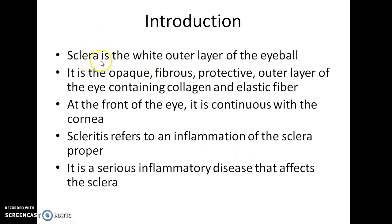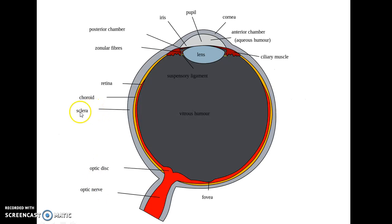What is sclera? Sclera is the white outer layer of the eyeball — the opaque fibrous protective outer layer of the eye containing collagen and elastic fiber. At the front of the eye, the sclera is continuous with the cornea. Scleritis refers to an inflammation of the sclera proper; it is a serious inflammatory disease that affects the sclera.